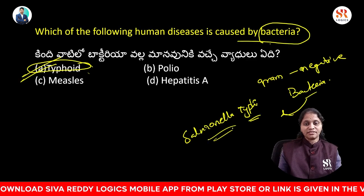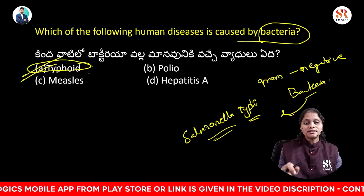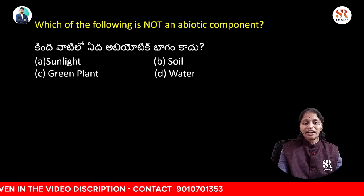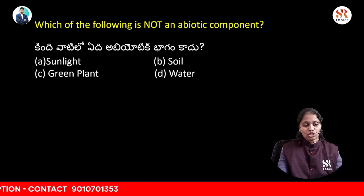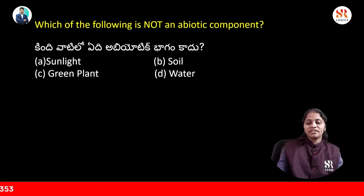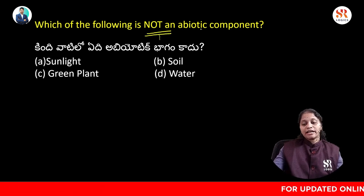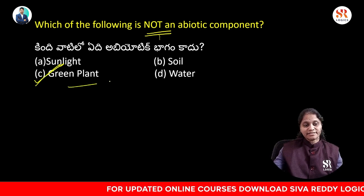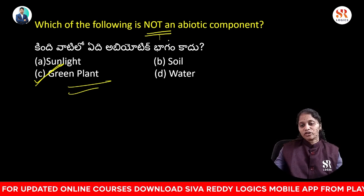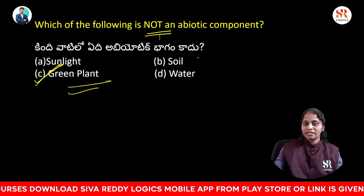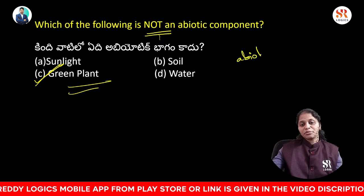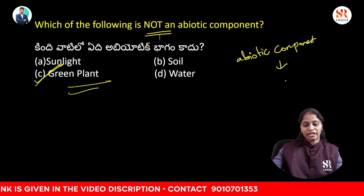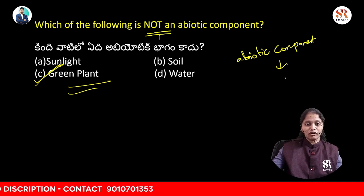Typhoid fever is due to the bacteria called Salmonella typhi. Next: which of the following is not an abiotic component — sunlight, soil, green plant, or water? The answer is green plants, as these are not abiotic components. Sunlight, soil, and water are abiotic components, whereas green plants are biotic.